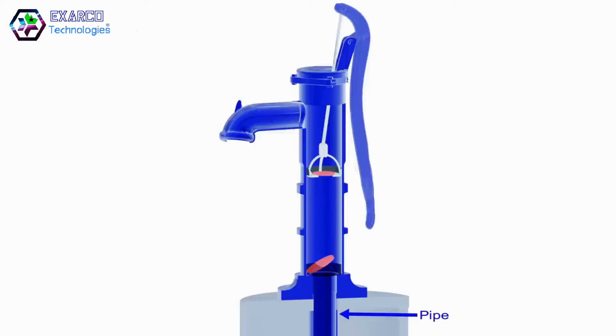A pipe is connected to the cylinder, which is submerged in water. An outlet is fitted through which water flows out of the pump.